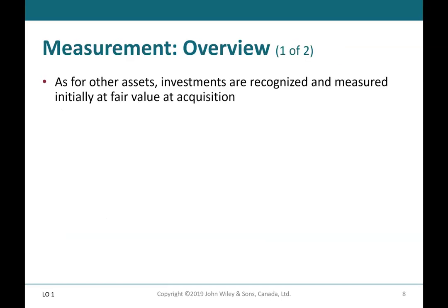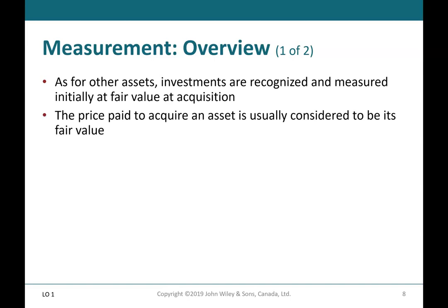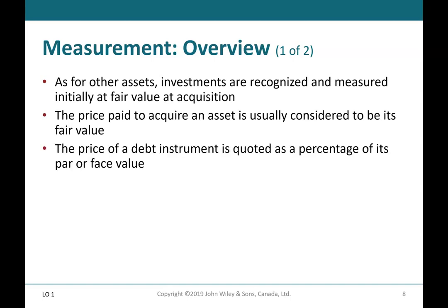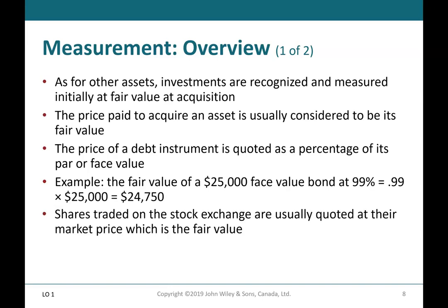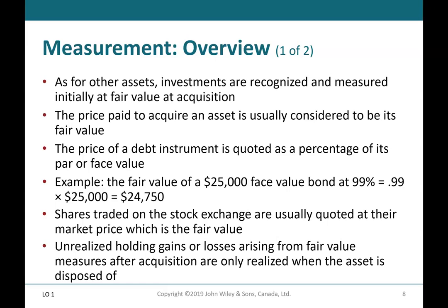Measurement overview, Part 1 of 2. As with other assets, investments are recognized and measured initially at fair value at acquisition. The price paid to acquire an asset is usually considered to be its fair value. The price of a debt instrument is quoted as a percentage of its par or face value. For example, the fair value of a $25,000 face value bond at 99% equals 0.99 × $25,000 = $24,750. Shares traded on the stock exchange are usually quoted at their market price, which is the fair value. Unrealized holding gains or losses arising from fair value measures after acquisition are only realized when the asset is disposed of.